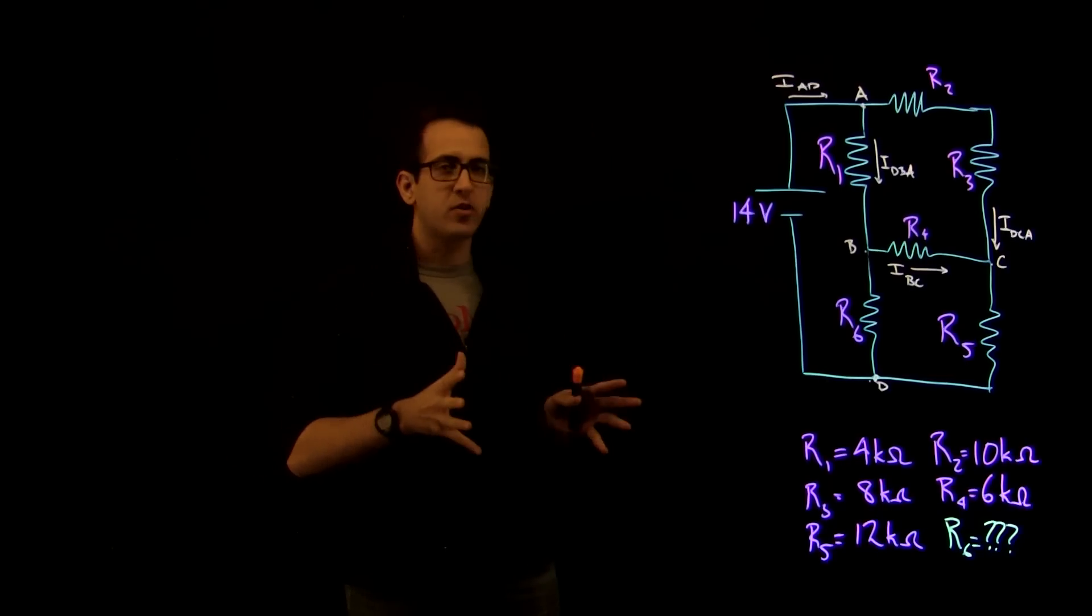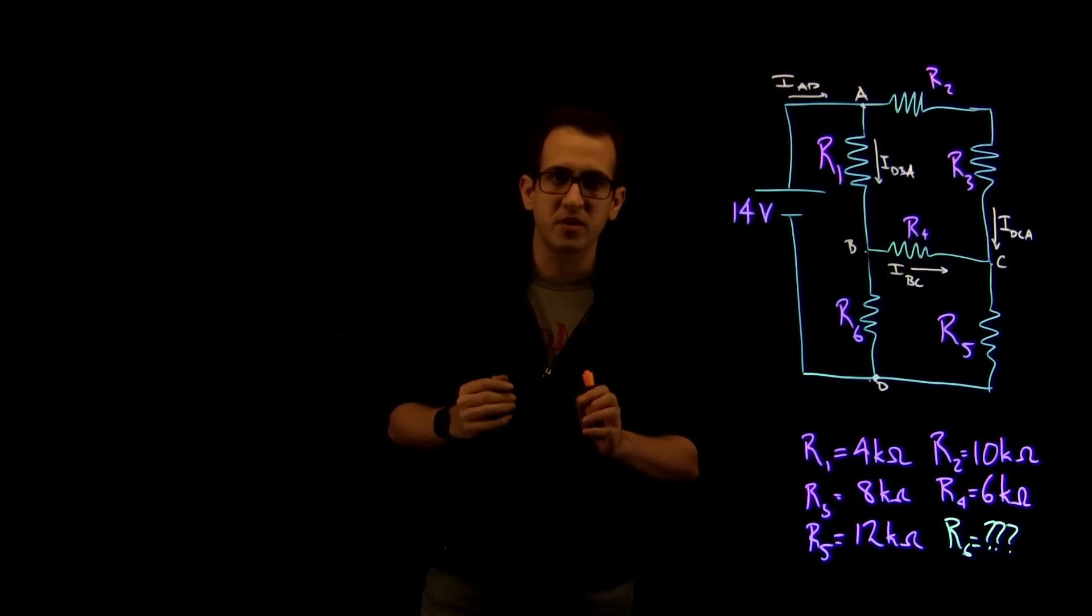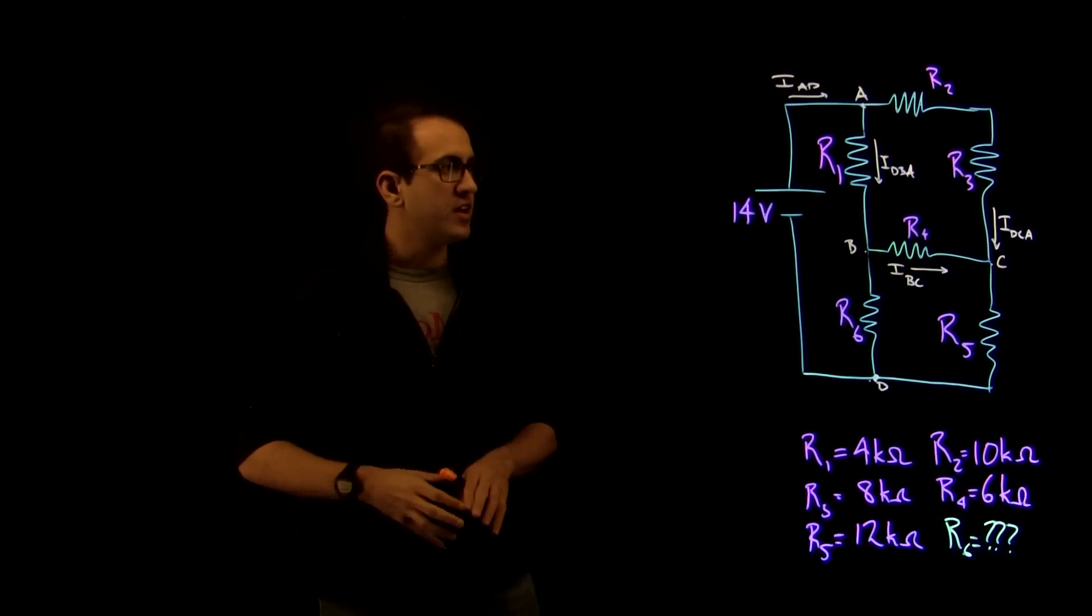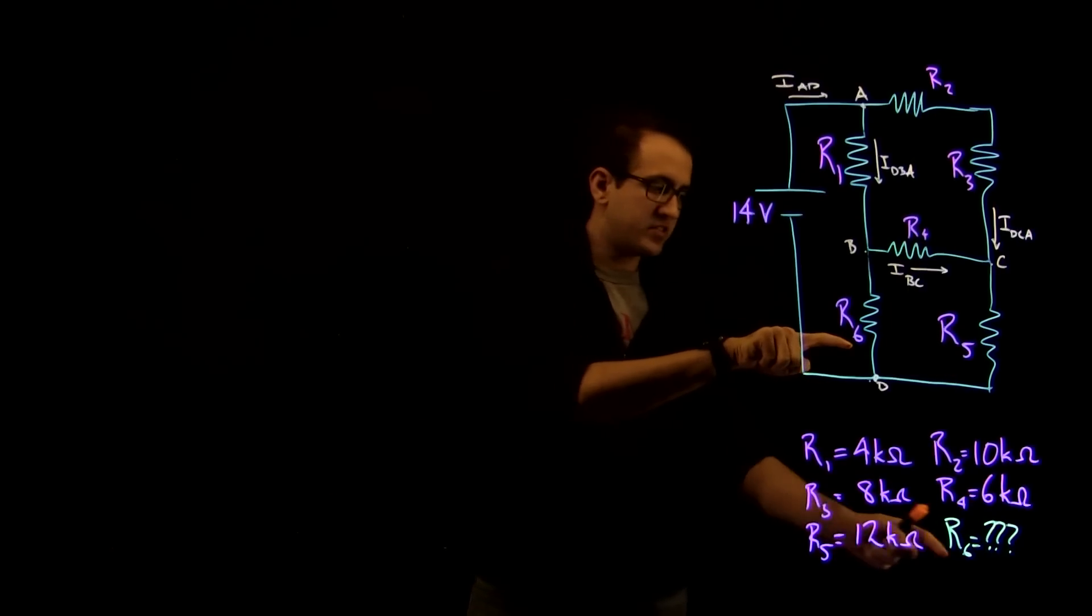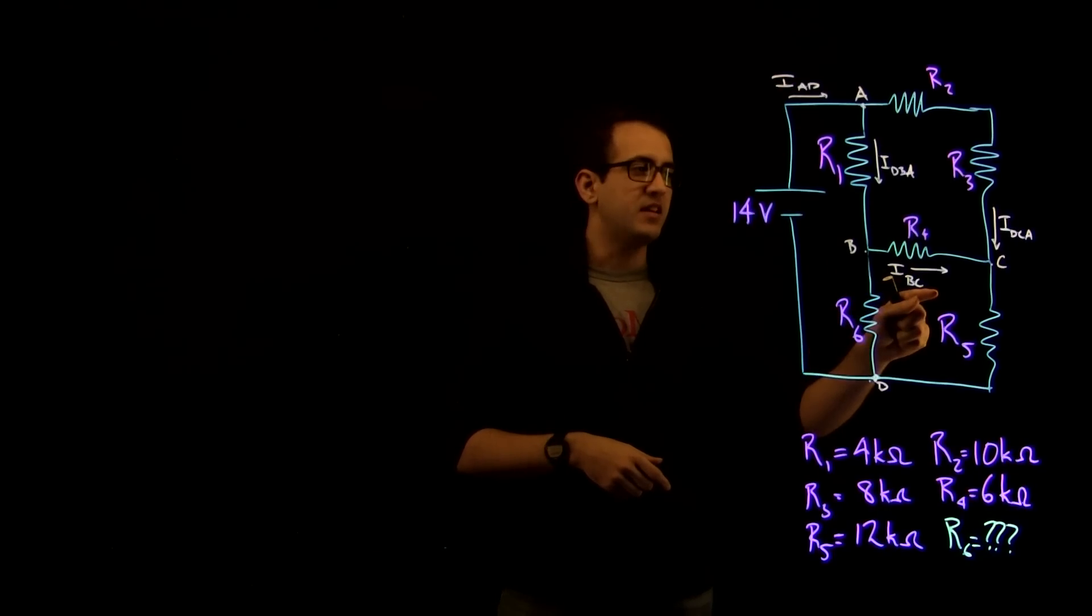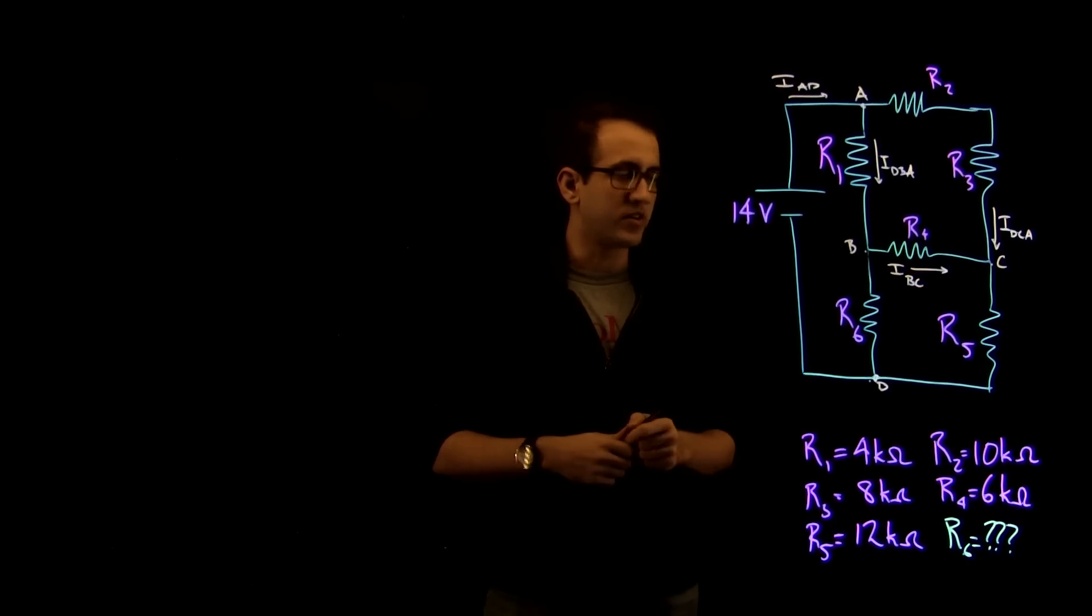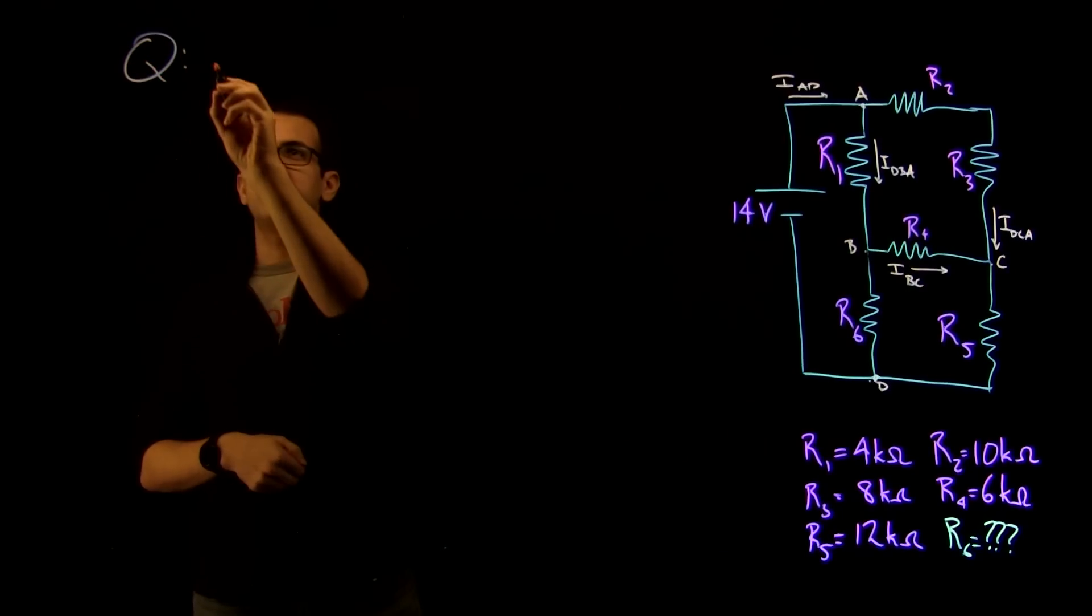So, Wheatstone bridges are notoriously difficult to solve, but the trick here is we're going to be solving a balanced Wheatstone bridge. And what that means is that we want to solve for R6, which is our current unknown quantity, such that IBC, which is the current going through R4, is zero.